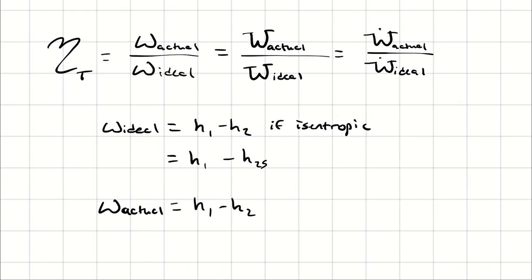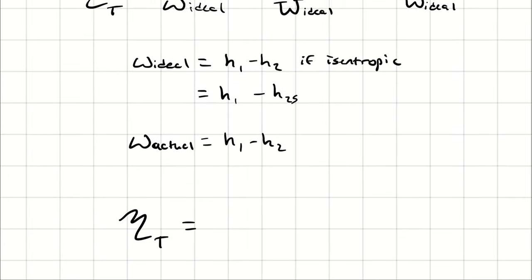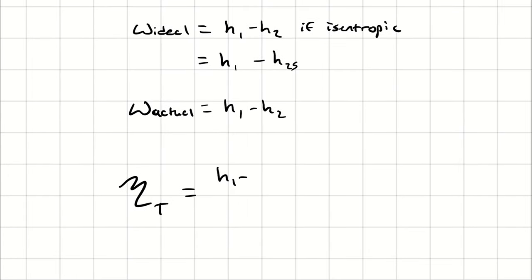So, in the isentropic efficiency of our turbine, we have the proportion of actual work to ideal work, which is going to be H1 minus H2, divided by H1 minus H2S.